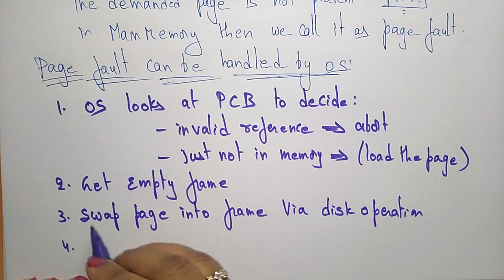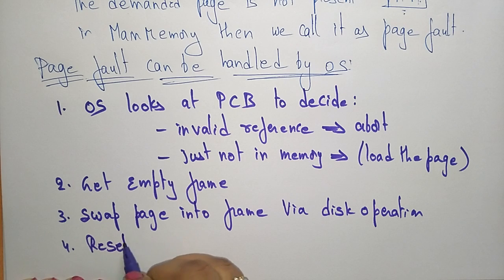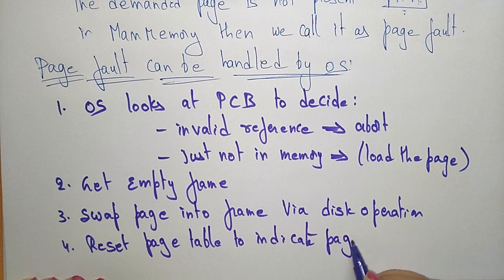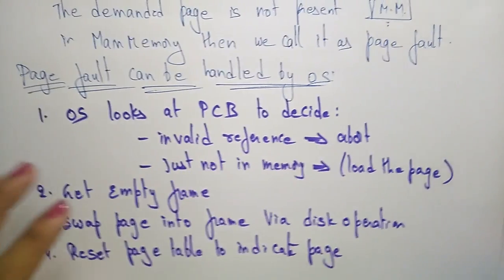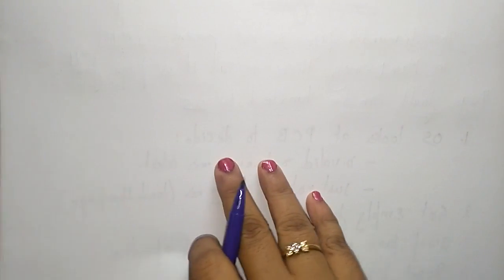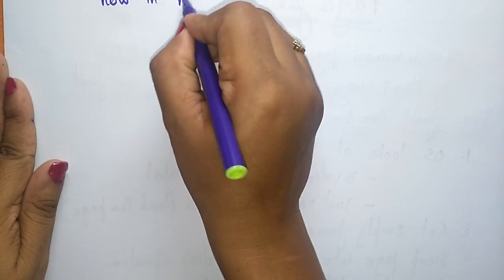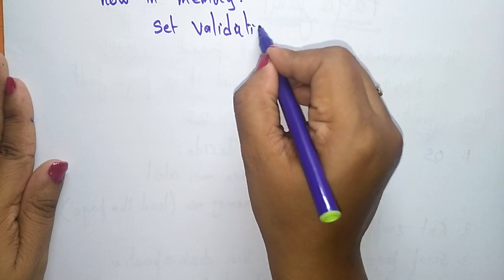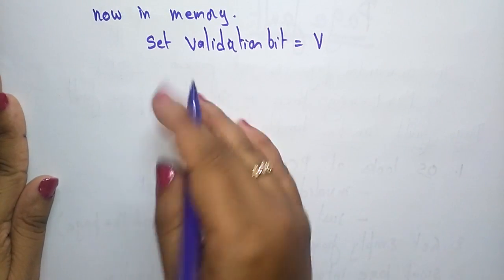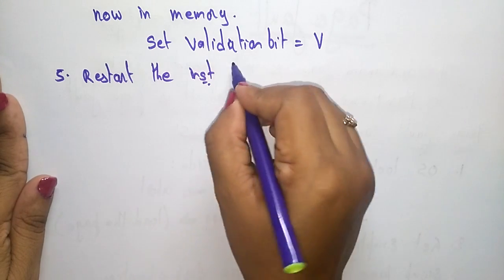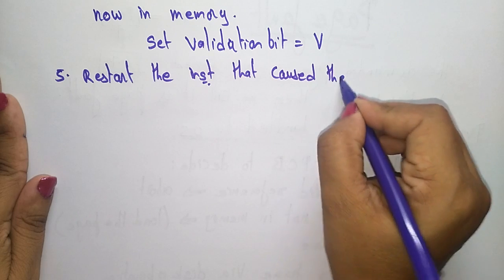Next, reset the page table to indicate the page. Whenever the page is swapped in and becomes a frame, we have to reset the page table. Now the page is present in memory, so we set the valid bit equal to V. After that, we restart the instruction that caused the page fault.